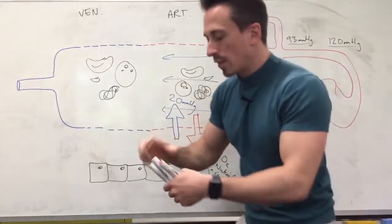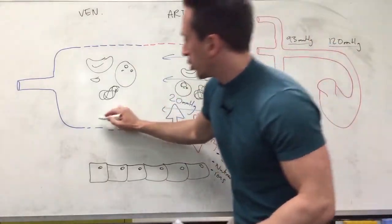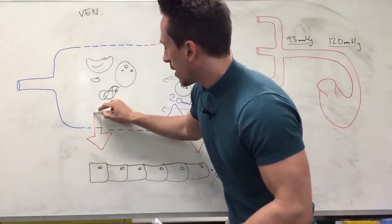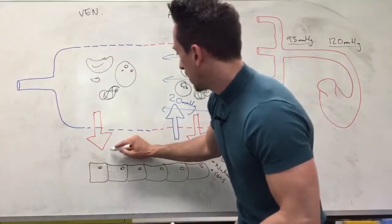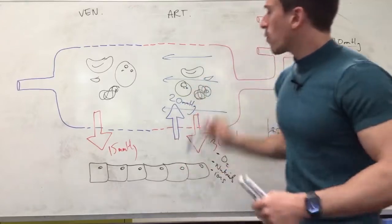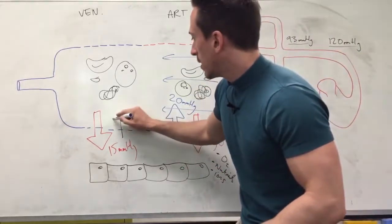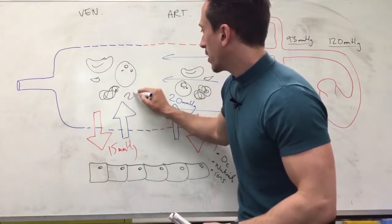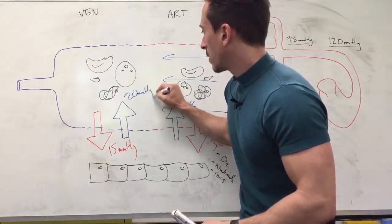30 millimeters of mercury pushing out, but then all that fluid's coming out, so now you've got on the venous end an outward push of only 15 millimeters of mercury worth of pressure and an inward pull still of around about 20 millimeters of mercury.